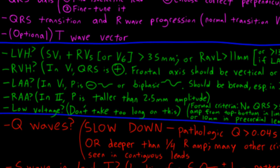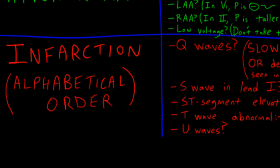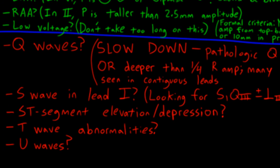And then finally, I get to this step called infarction, which really looks at a lot more than just infarction. And so I go in alphabetical order looking for Q waves, which are signs of prior MI. And then I look for an S wave in lead one, which if it's there, then I look for an S1, Q3, T3 pattern, which can be seen with right ventricular pressure overload syndromes, acute or chronic. We'll talk more about that later.